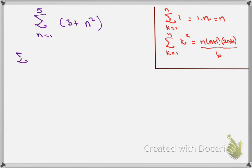So that will give me a summation n equals 1 to 5 of 3 plus a summation n equals 1 to 5 of n squared.